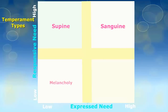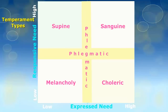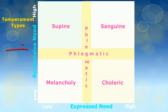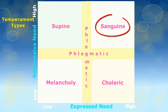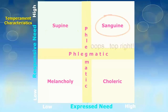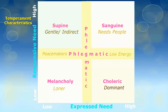The temperament types are based on a spectrum of needs. On the chart, the bottom axis shows an expressed need from low to high, and the left-hand column shows a responsive need from low to high. Today we are going to look at the sanguine temperament, which appears in the top left-hand corner of the chart. A person can be a different temperament in different areas — melancholy in one, supine in another, sanguine maybe in affection.